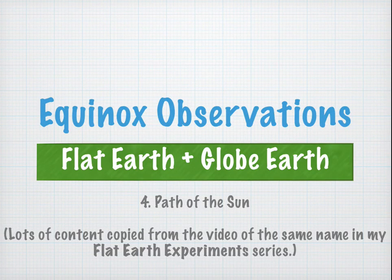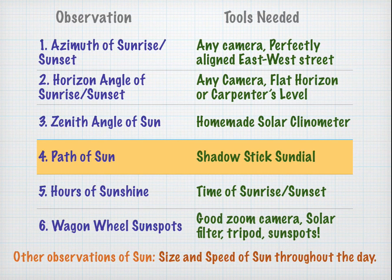Equinox observations: Flat Earth and Globe Earth, Part 4 — Path of the Sun. A lot of the content in this video is copied from my other Path of the Sun video from the Flat Earth Experiments series. This video is part 4 of our 6-video series. In this, we'll simply make a shadow stick sundial and record the shadows.